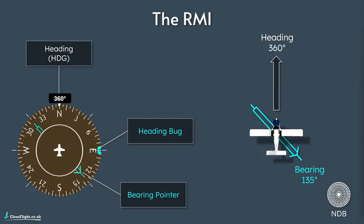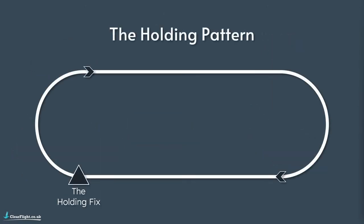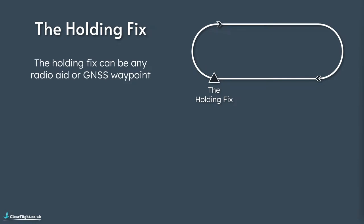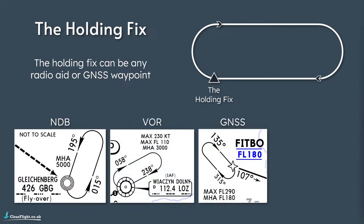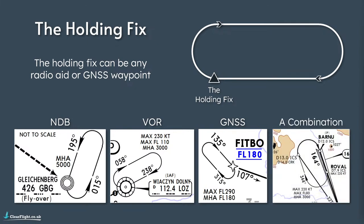Looking at that instrument on the left, that would be an aircraft currently on a heading of 360 degrees but in a right-hand turn onto a heading of 090 degrees. The holding pattern is this racetrack-shaped pattern that we fly, centred around some kind of holding fix. The holding fix itself can be pretty much any point we can define - any radio navaid, or a GNSS waypoint. The most common ones are NDB holds, VOR holds, GNSS holds, or some combination. With modern technology we can define any point in space and fly a hold around it.